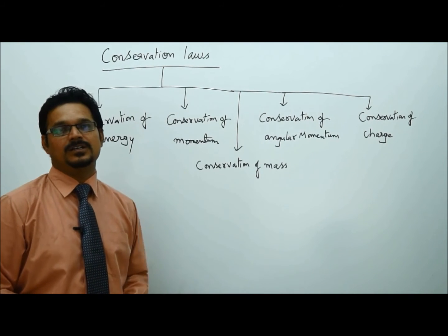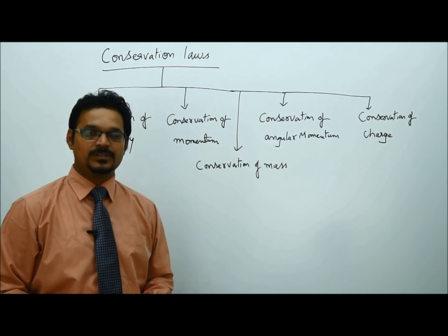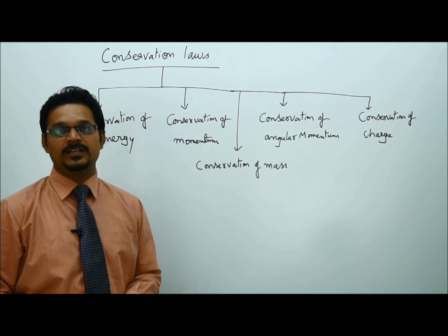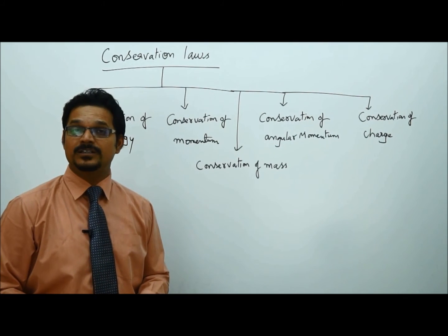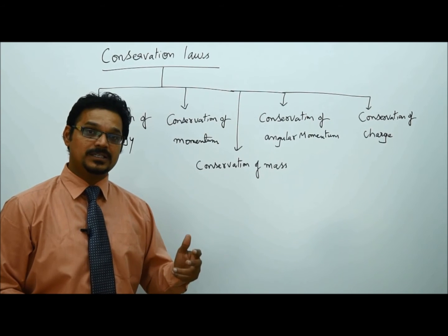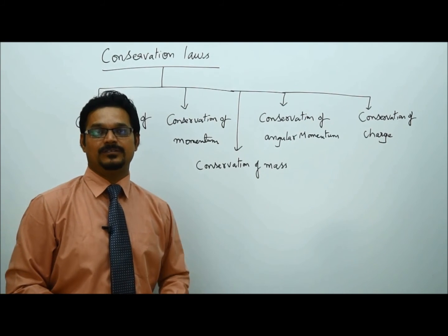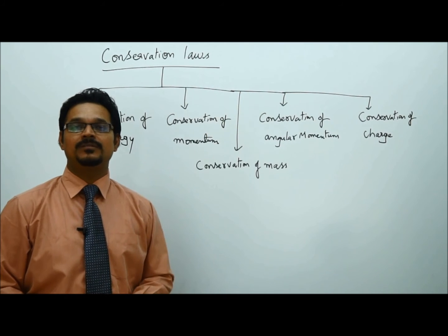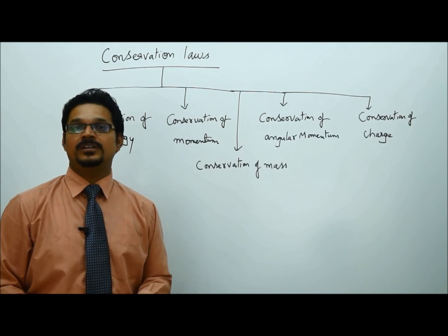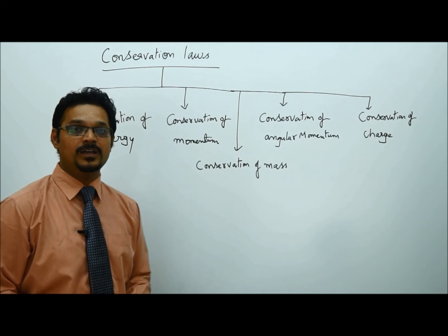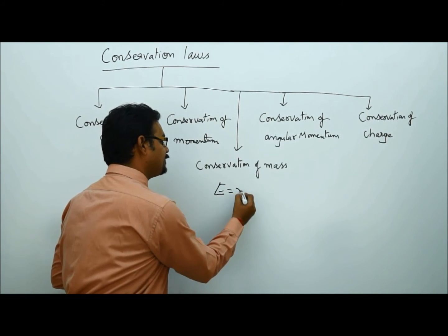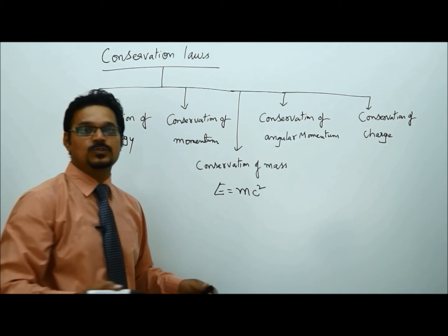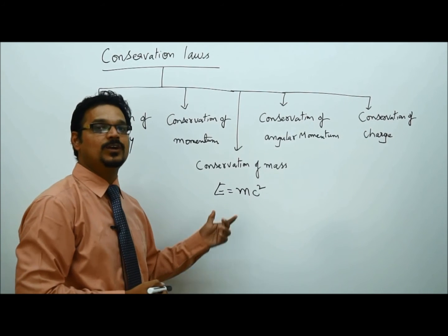But later, it was disproved by Einstein saying that the total mass does not remain constant. After the reactions, mass is changed in the form of energy, called binding energy, which is the famous law, we can say, and the formula is E equals to MC square.